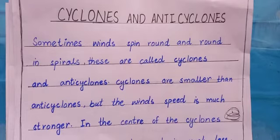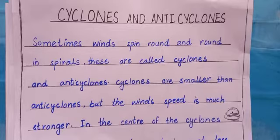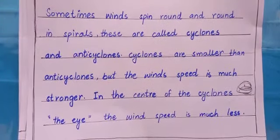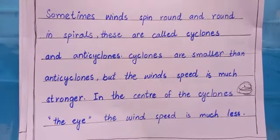Cyclones are smaller than anti-cyclones, but the wind speed is much stronger. And in the center of the cyclone — the eye — the wind speed is much less.